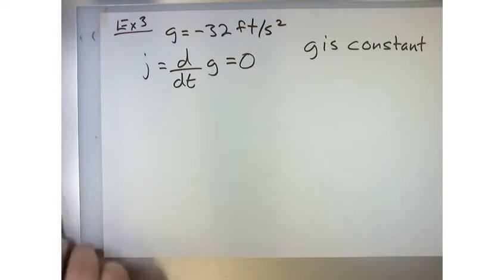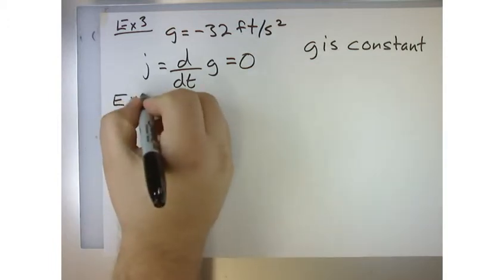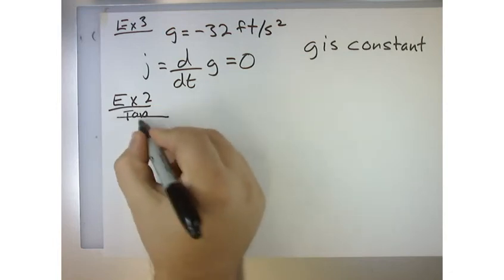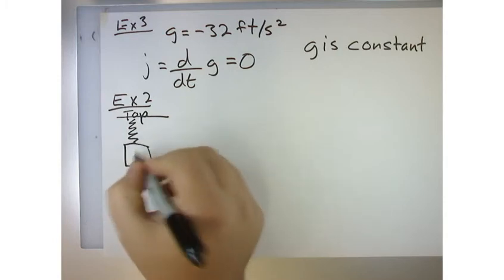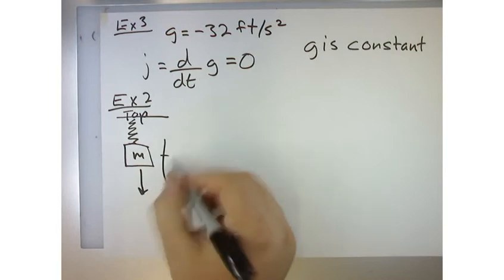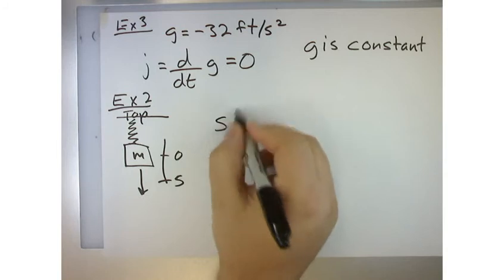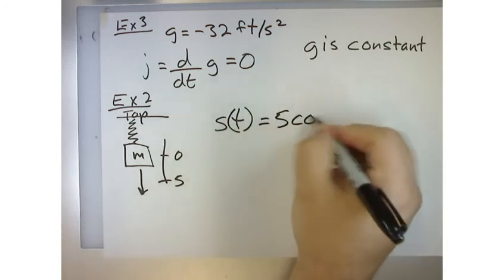But that's one version of jerk. But now let's revisit example number two. Now, I don't remember if you guys, just to kind of refresh your memory of what example number two is. Example number two, we covered an object that was connected on a spring. And we stretched the spring. And we stretched the spring out five units. And we let go of the spring.